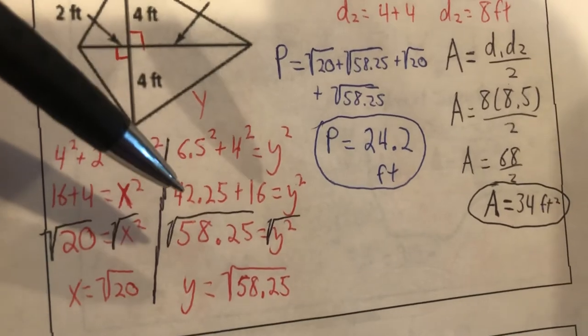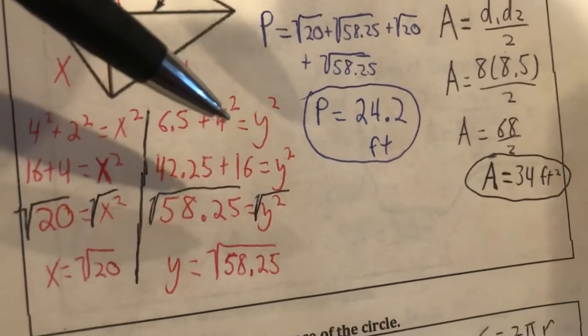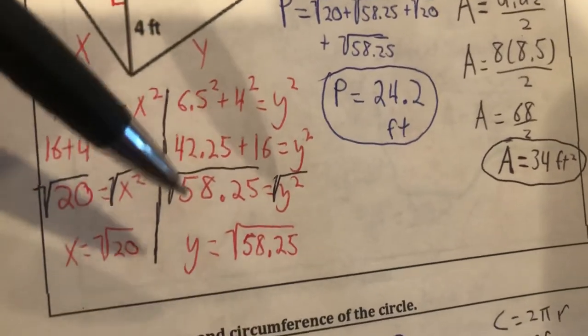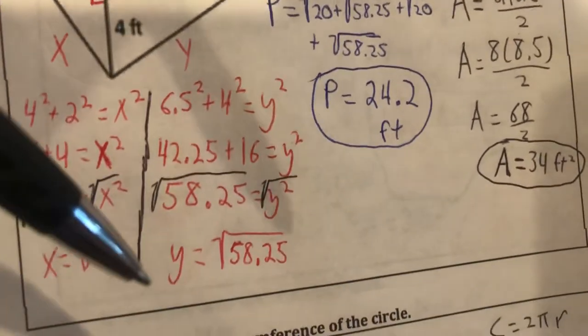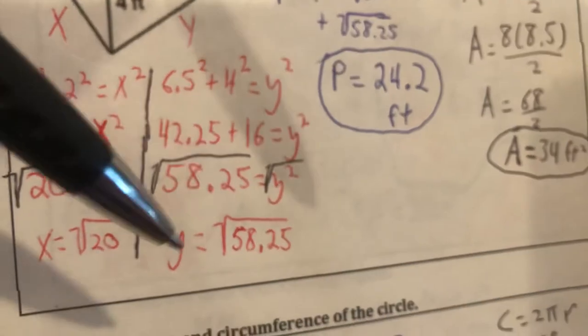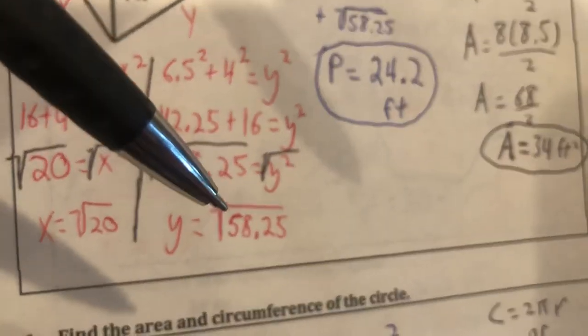When you square 6.5 you should get 42.25. Square 4 you should get 16. When we add those together we get 58.25. We have to take the square root of both sides, so y ends up being the square root of 58.25. And again I figured I'll just round later.